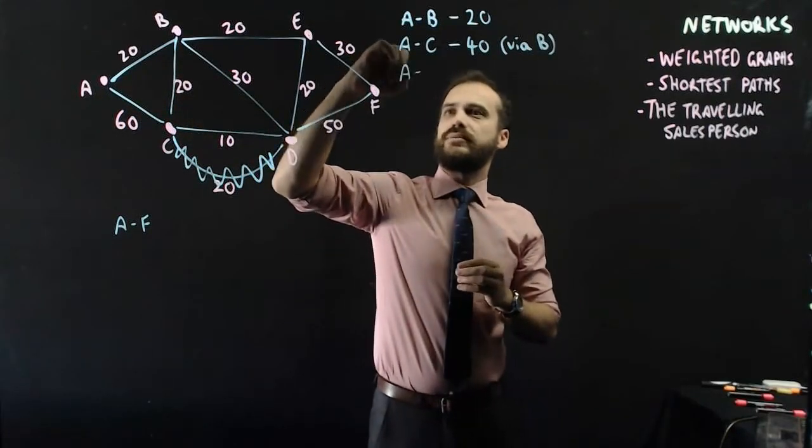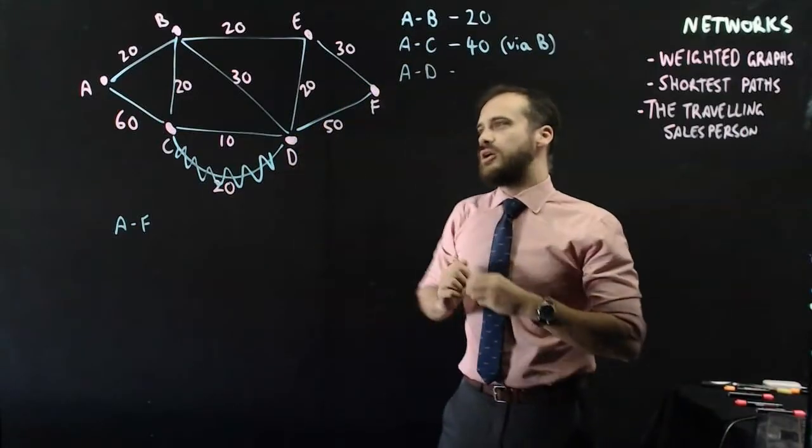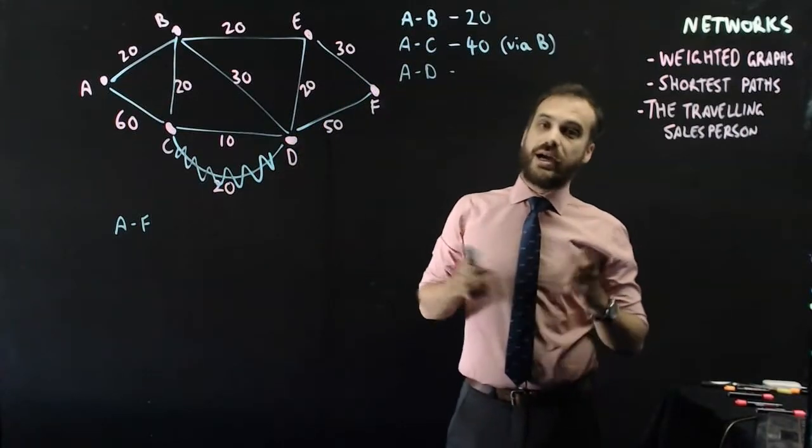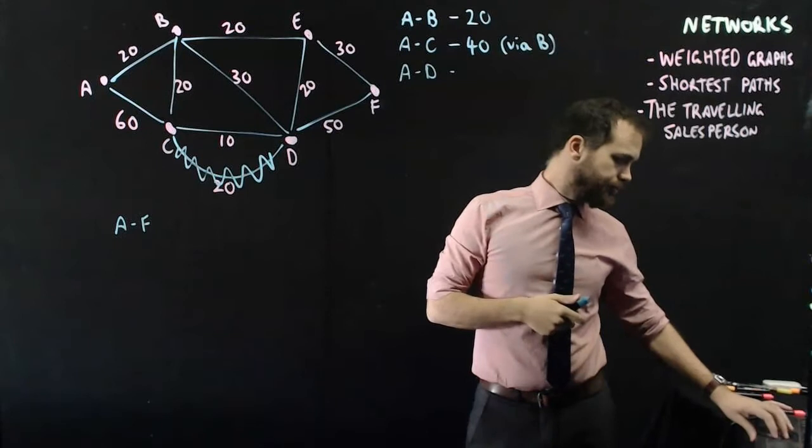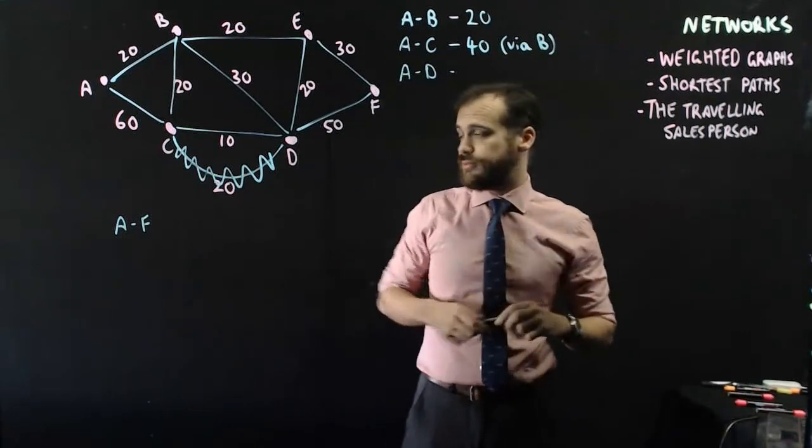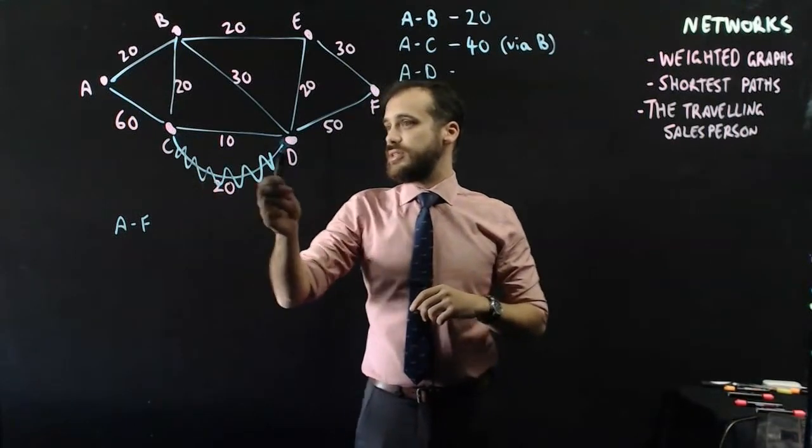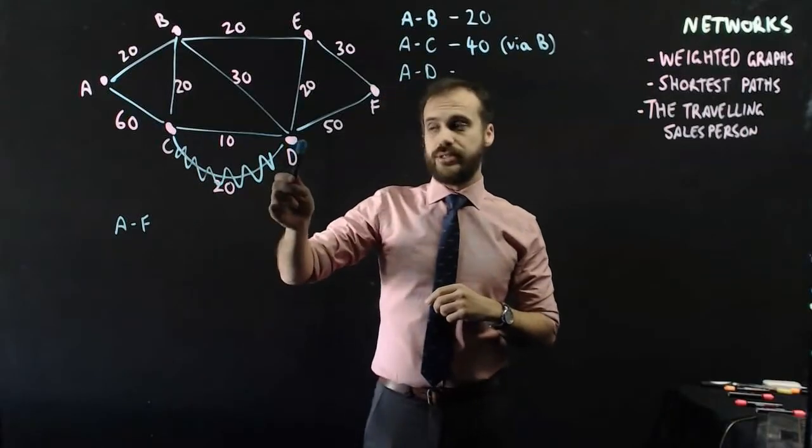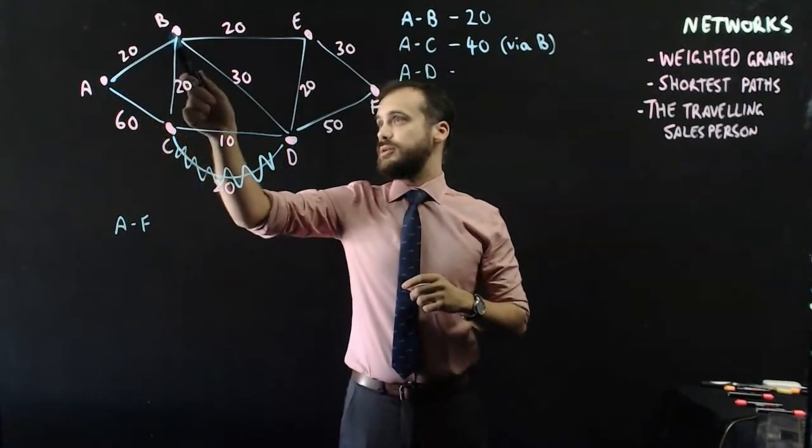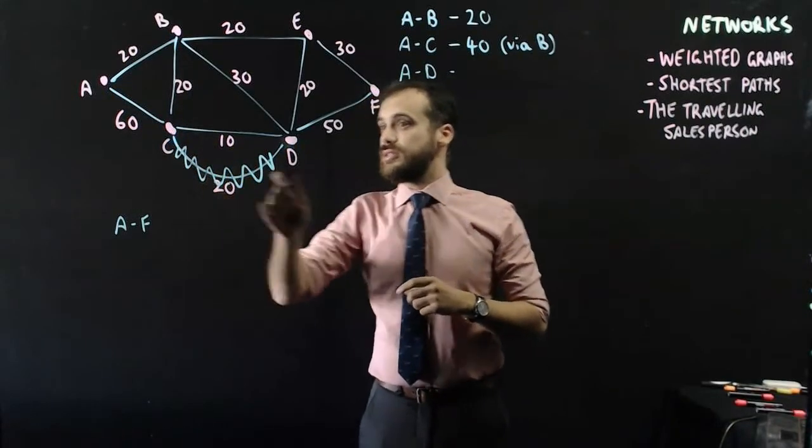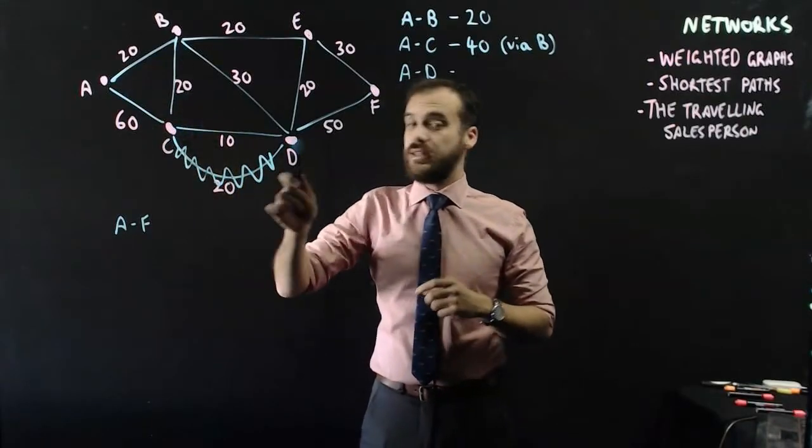Okay, what about A to D? You might want to pause the video and think about what is the shortest way to get from A to D. Now, there's a lot of different ways to do it. You can go A to C to D, that's 70 kilometres. You can go A to B to C to D, that's 20 plus 20 plus 10, that's 50.